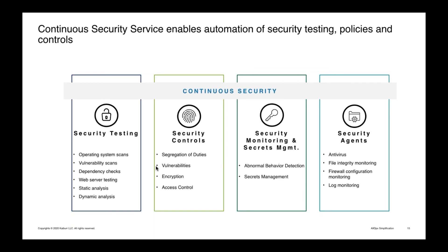The third key pillar is security monitoring and secrets management. Many hacks occur because people leave access tokens or passwords in a file or checked into their GitHub repository. It's critical to manage everything in a secret management tool like a vault. You also need the ability to continuously monitor your environment through log aggregation, filtering against threat feeds to stay current with evolving security threats.